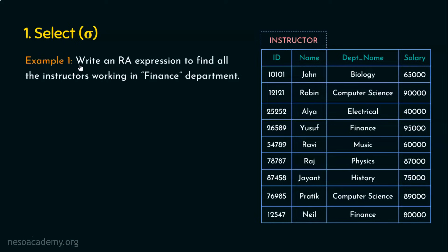Example 1: write a relational algebra expression to find all the instructors working in the finance department. We are going to retrieve information about all instructors in finance — the output will contain all attributes: ID, name, department name, and salary. The condition is that the department name should be 'finance'. Looking at the table, there are two finance department instructors, so the output will contain two tuples.